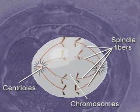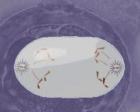The chromosomal pairs line up at the center of the cell and then split apart so that individual chromosomes move to opposite sides of the cell along the spindle fibers.